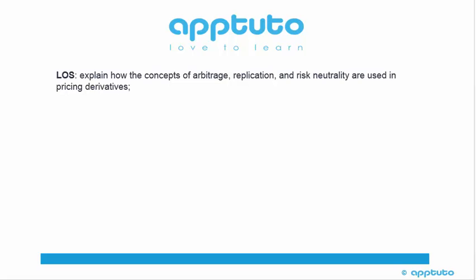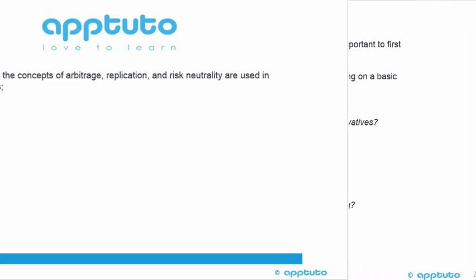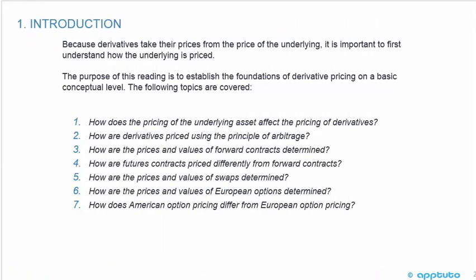This LOS explains how the concepts of arbitrage, replication and risk neutrality are used in pricing derivatives. Before we jump into this LOS, we're going to do a bit of an introduction to the reading, which will cover not only this LOS but some upcoming ones. Because derivatives take their prices from the price of the underlying, it is important to first understand how the underlying is priced. The purpose of this reading is to establish the foundations of derivative pricing on a basic conceptual level.